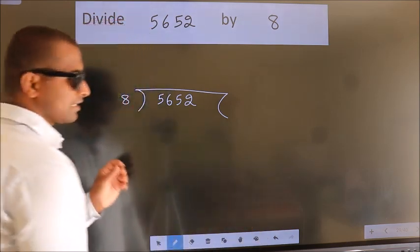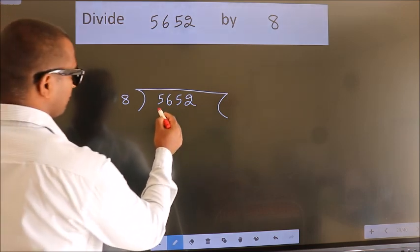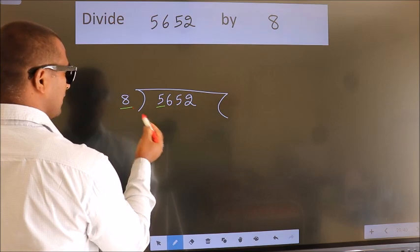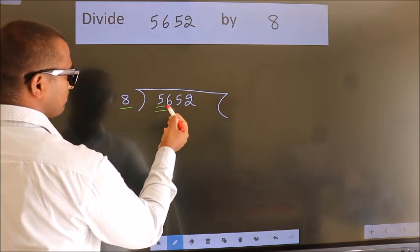This is your step 1. Next, here we have 5, here 8. 5 smaller than 8. So we should take two numbers, 56.